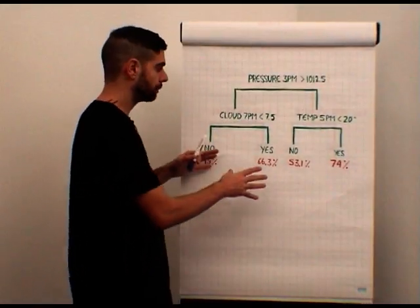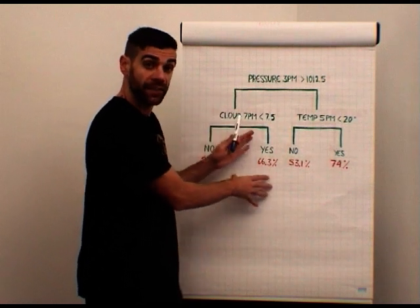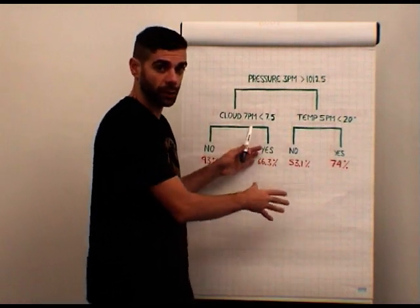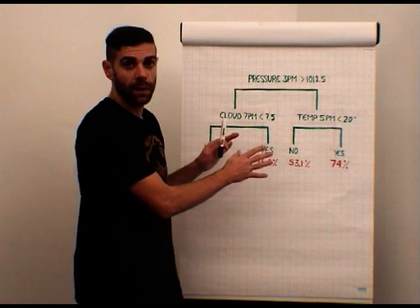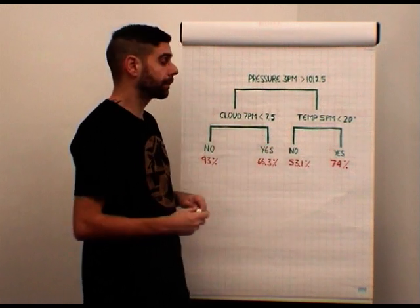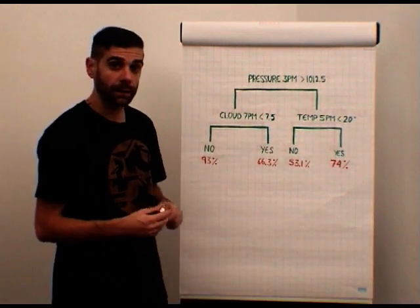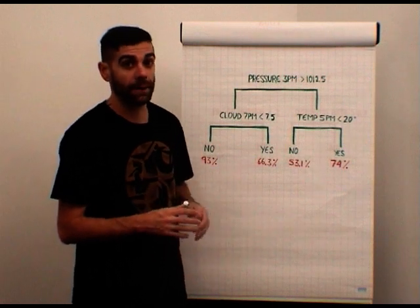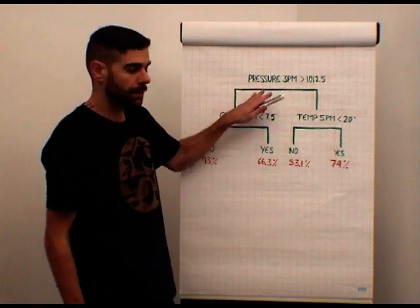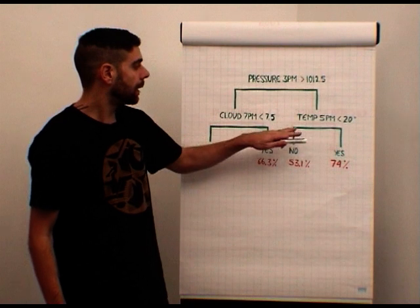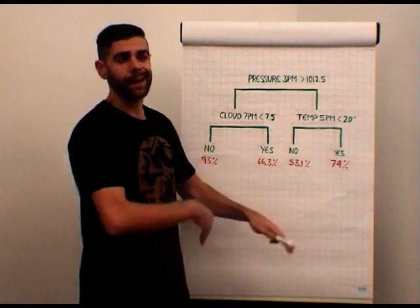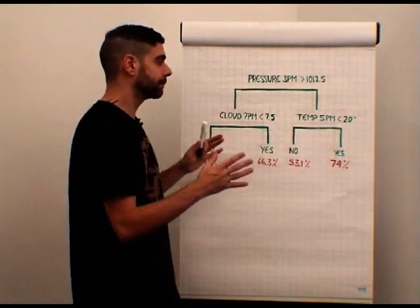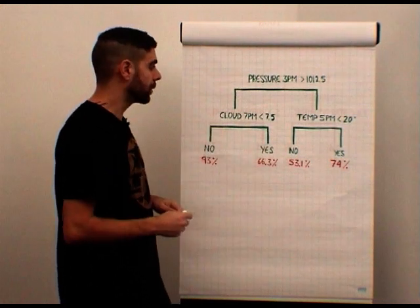Here we have the decision tree, the structure we showed before, filled with weather-related data. In this case we found that the most relevant variables are pressure, cloud rate, and temperature. There are a lot more but those are the most important.